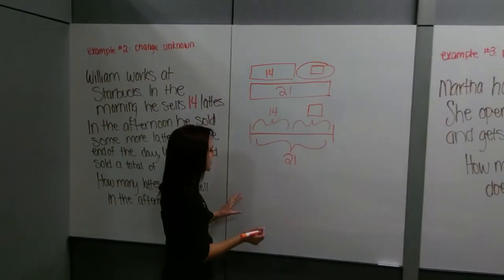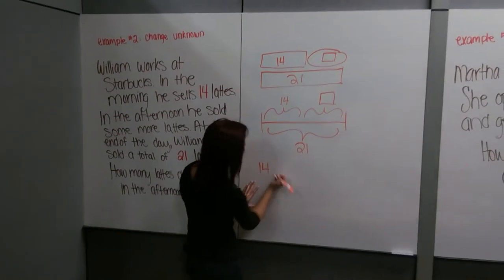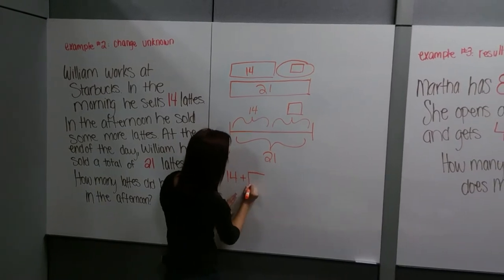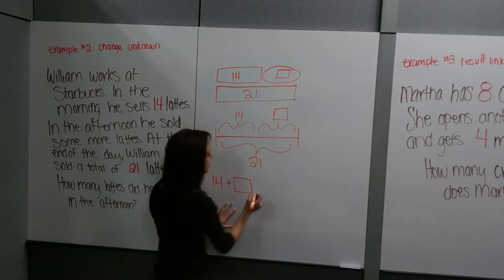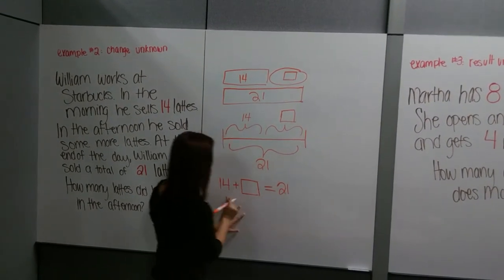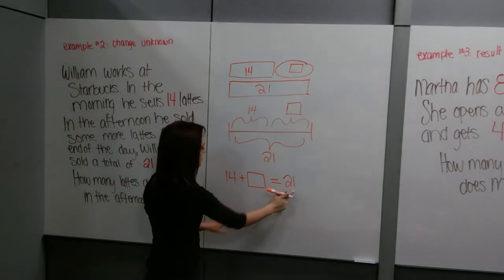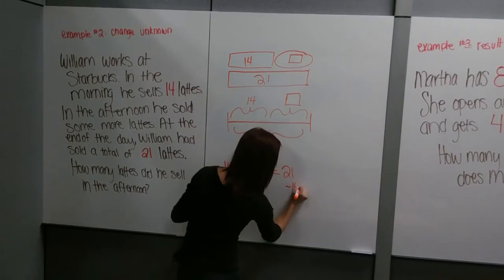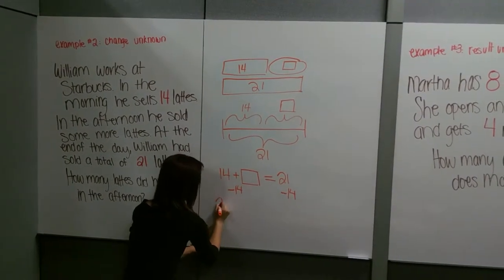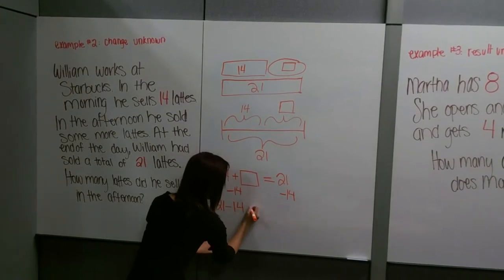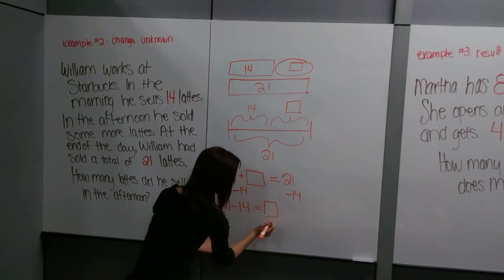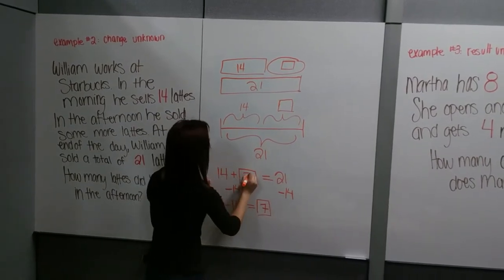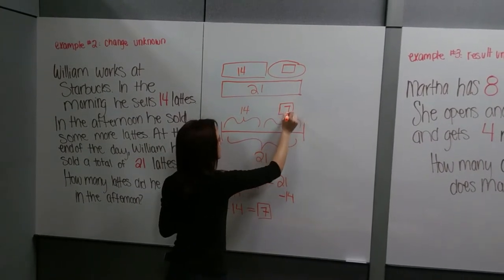To write an equation, we have 14 for the amount he started with, and then he sells some more, so it's a plus. We don't know how many more he sells, so we put a box. But we know that at the end he sold a total of 21. So we have 14 plus our unknown equals 21. We subtract 14 from both sides, giving us 21 minus 14 equals our unknown box. 21 minus 14 is equal to 7, so we go back and put 7 in all our boxes.